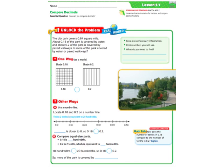Comparing decimals basically means when you compare, you're going to be putting in the sign less than, greater than, or equal to. You want to find out which decimal is bigger in this lesson. The city park covers 64 hundredths square mile. About 18 hundredths of the park is covered by water, and about two-tenths of the park is covered by paved walkways. Is more of the park covered by water or paved walkways?